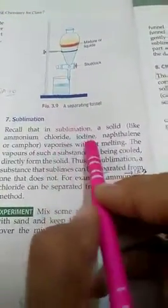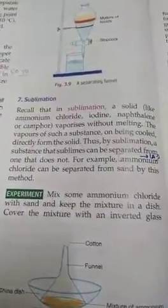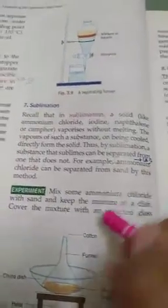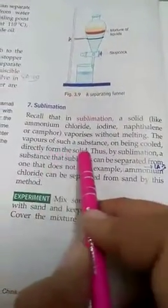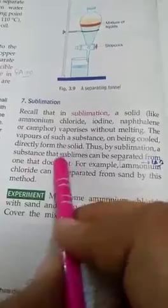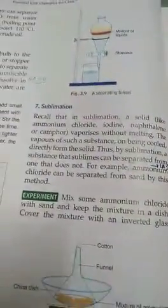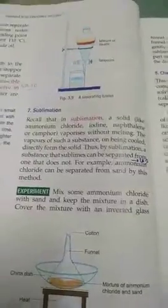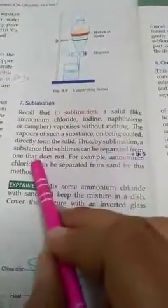They vaporize without melting. In your washrooms you use odonil. What does it do? Solid directly vaporizes without changing to liquid. The middle phase escapes. Then the vapor of such substance, on being cooled, directly forms solid. They just evaporate in the form of vapor.